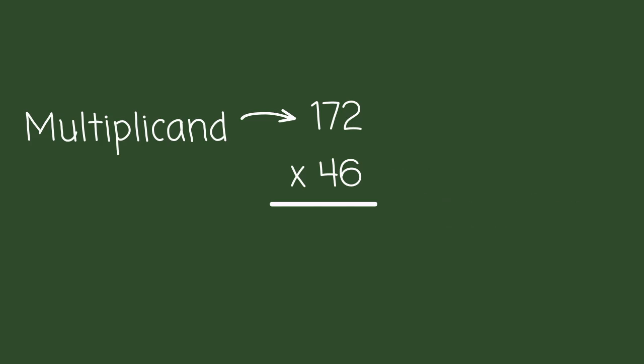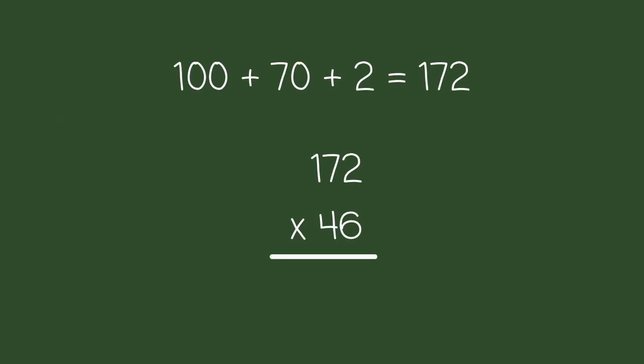Let's start with the multiplicand. Since there are 3 digits in this number, we will separate it into 3 smaller numbers. You can use this pattern to find double, triple, or even quadruple digit values. Now that you have these 3 numbers, you will take the multiplier and place it underneath each of these numbers.